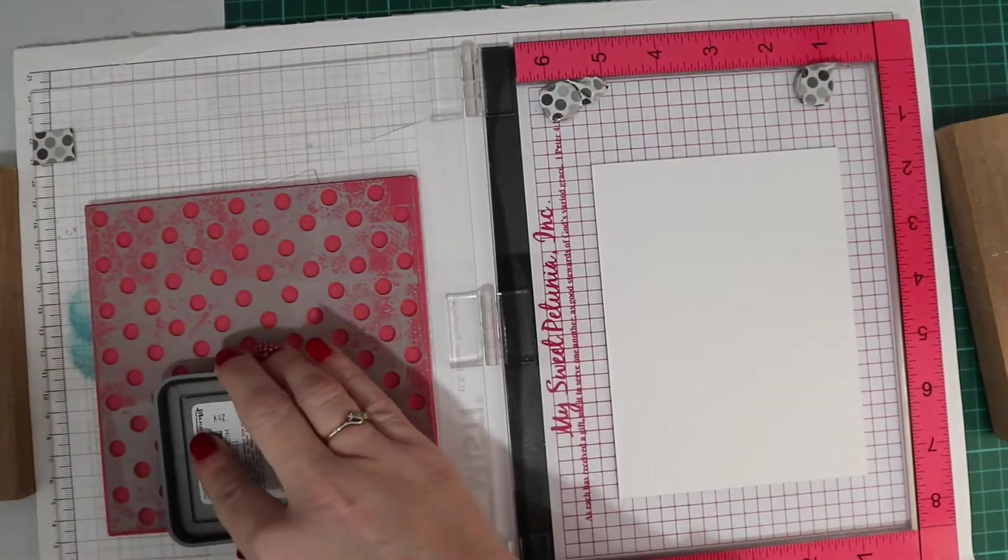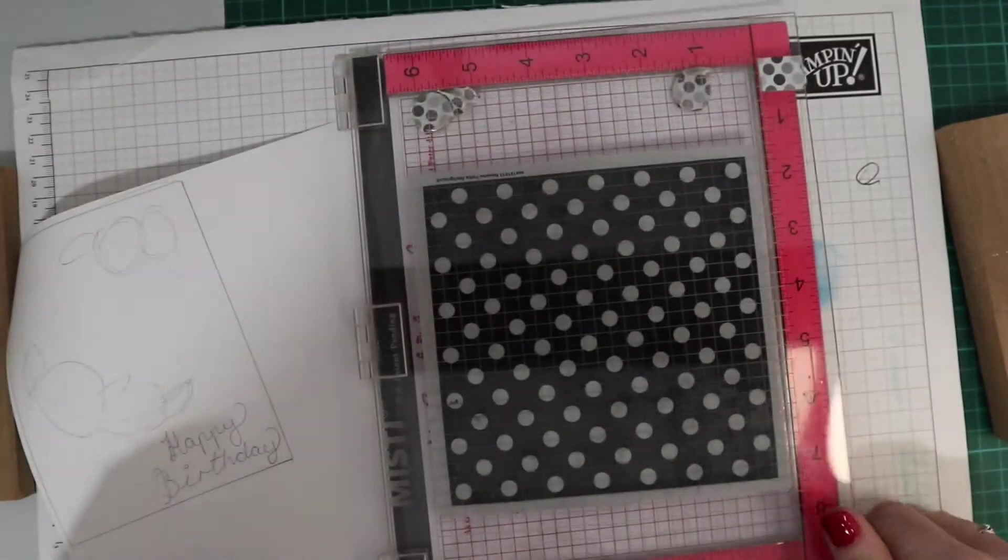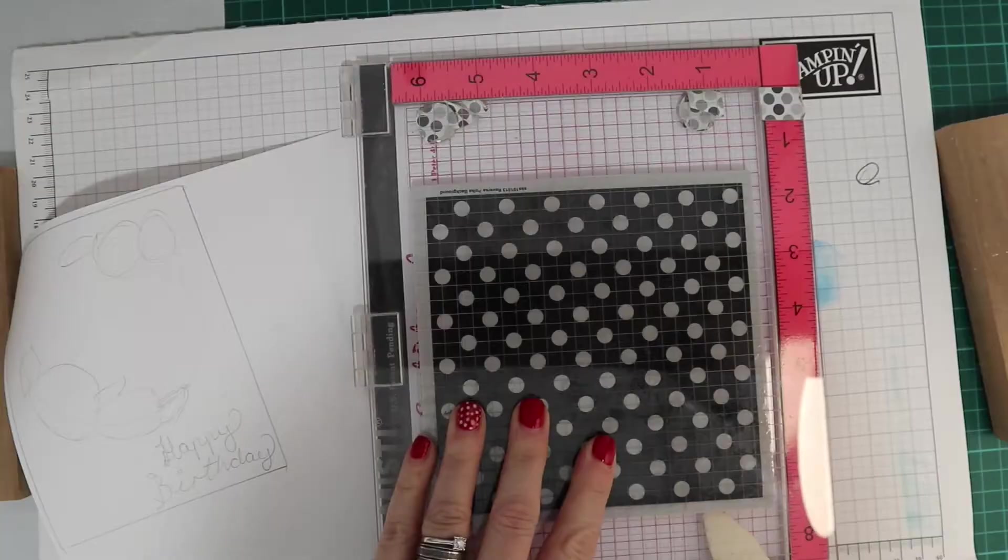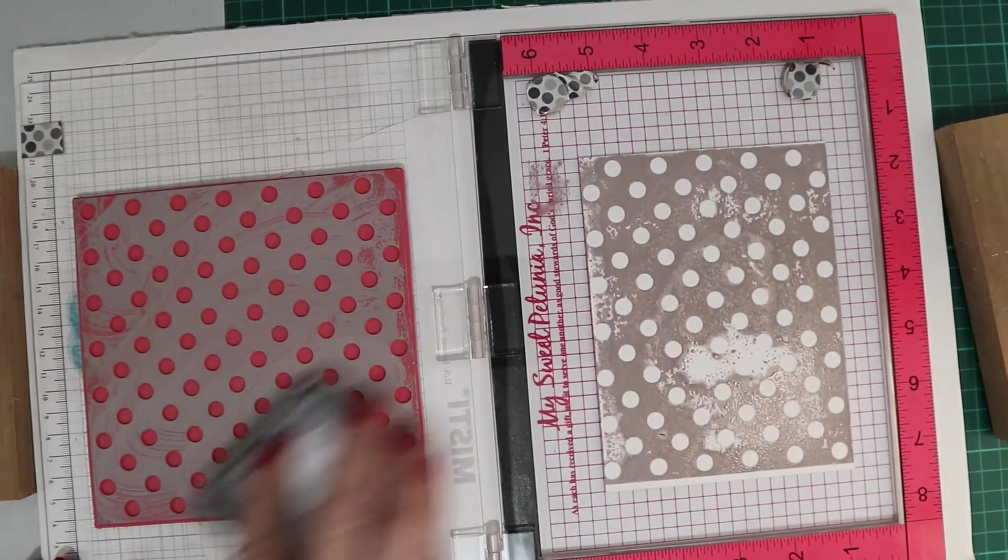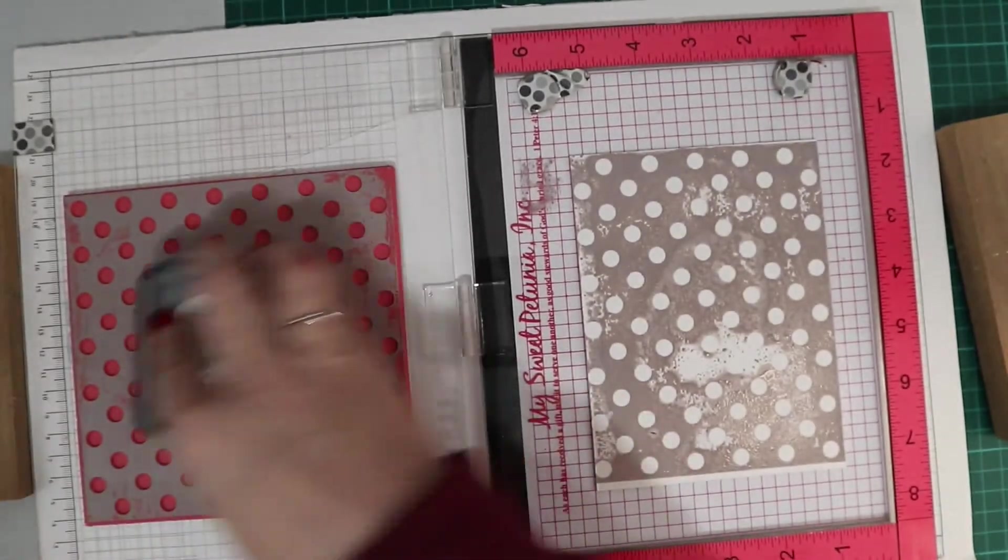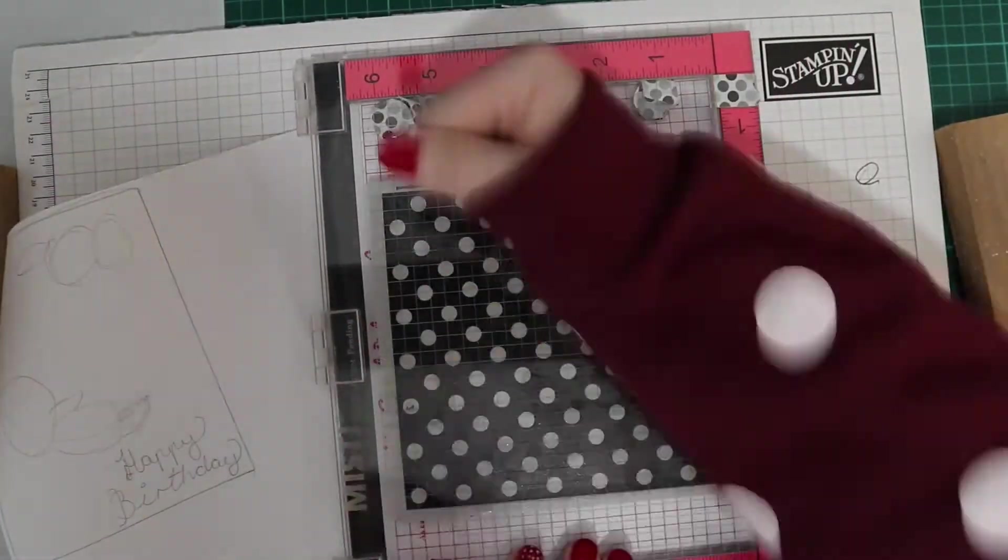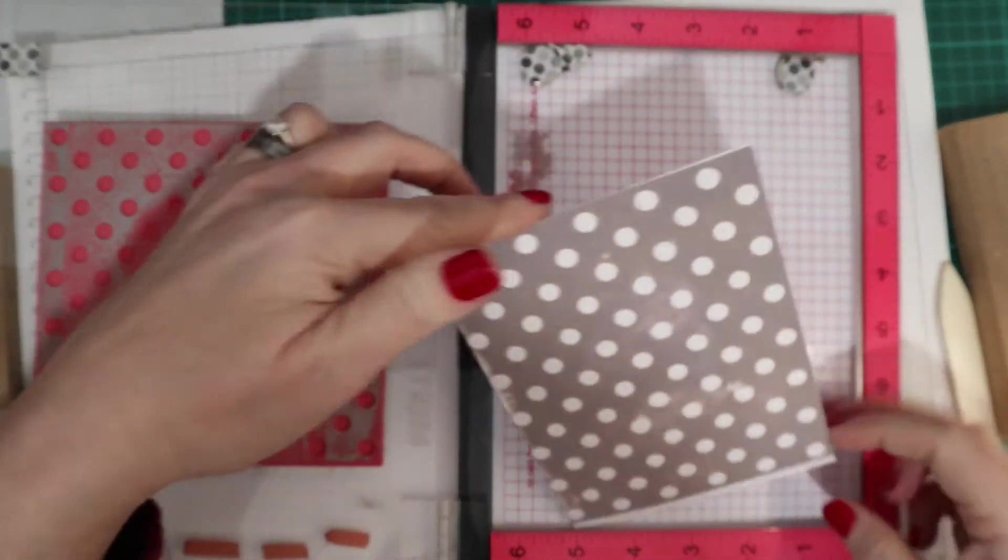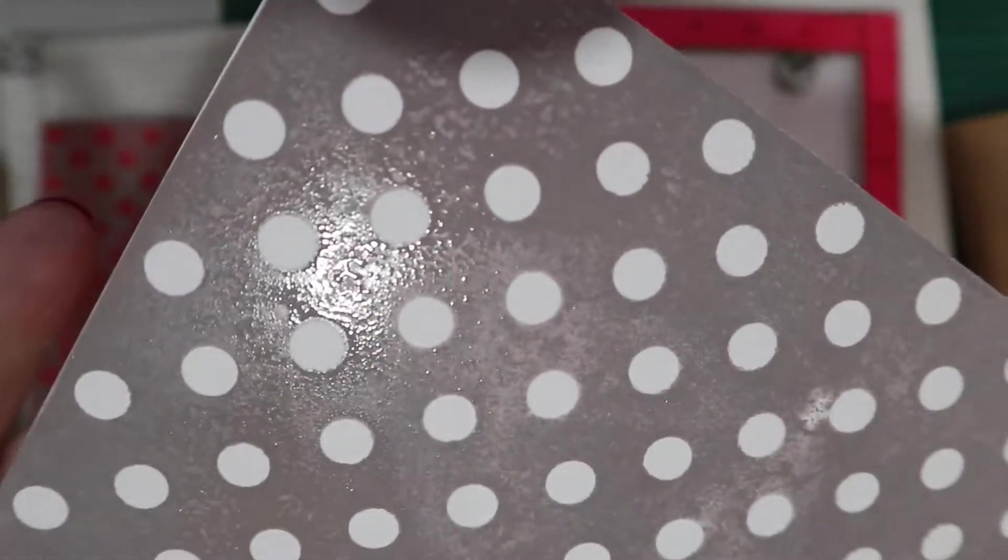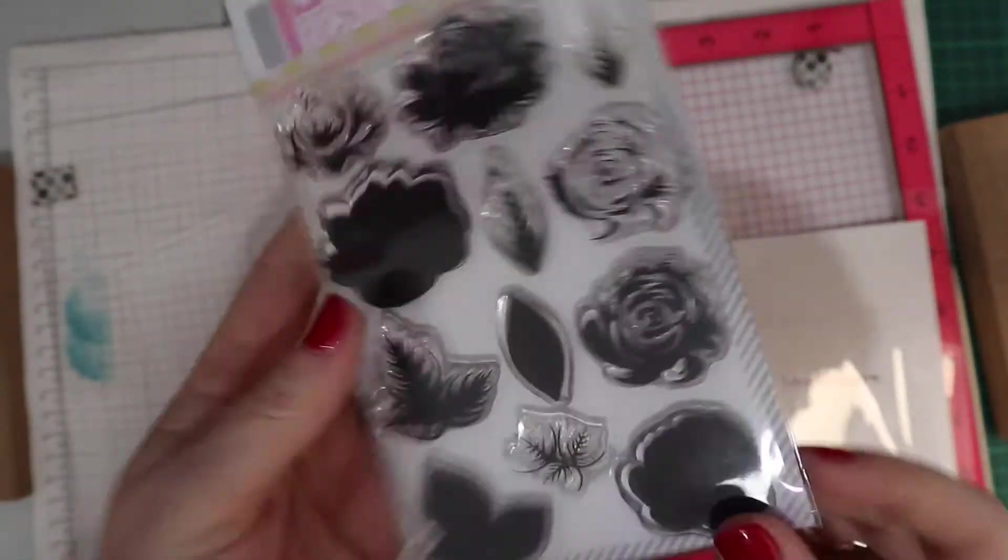I'm using a piece of Bristol smooth cardstock and the reverse polka dot background stamp from Simon Says Stamp to create my background, inking that up in hickory smoke distress oxide ink. They're just my go-to inks now. They stamp really well, they do stay wet longer, so you just have to bear that in mind. That just goes to one side to dry.